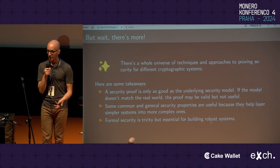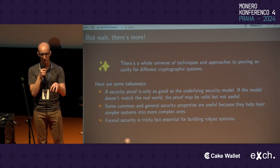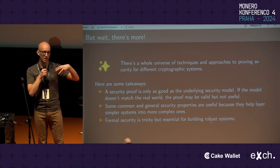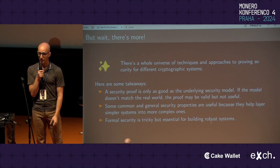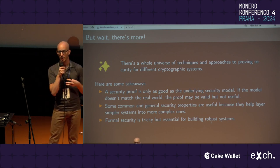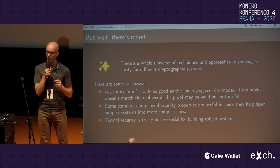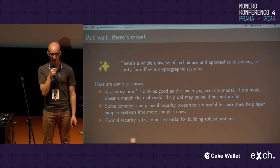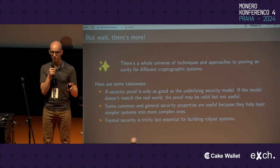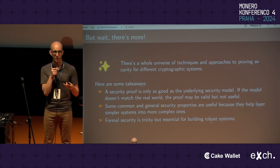The second takeaway is that common and general security properties are useful because they let you take simpler systems — like a range proving system or a linkable ring signature — and stack them up into more complex systems like a transaction protocol. The third and biggest takeaway is that formal security is very, very tricky. Formalizing these things, building games, and putting security proofs together is really subtle and easy to get wrong, but it's essential for building robust systems.